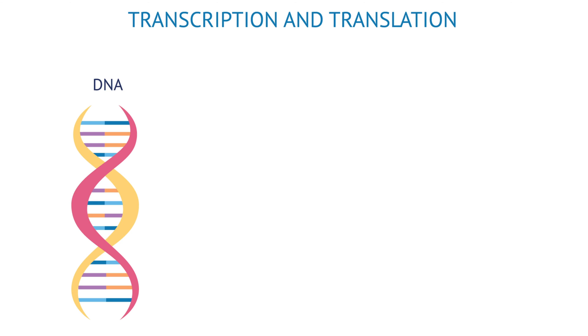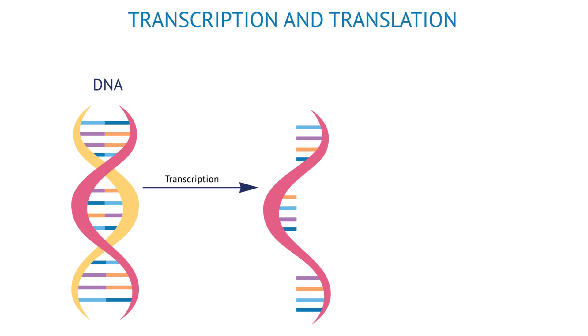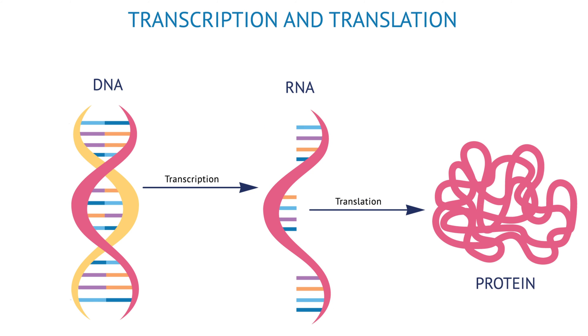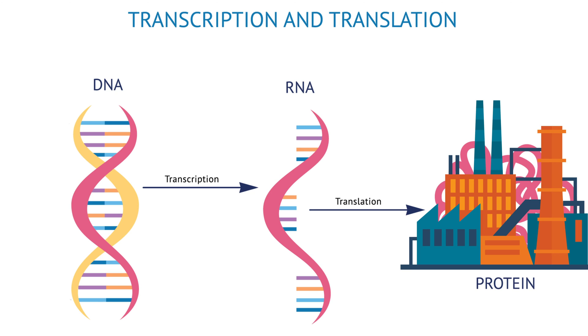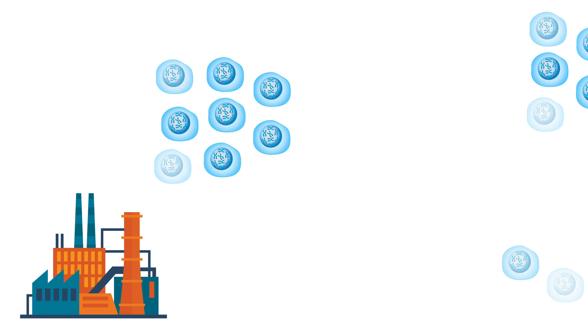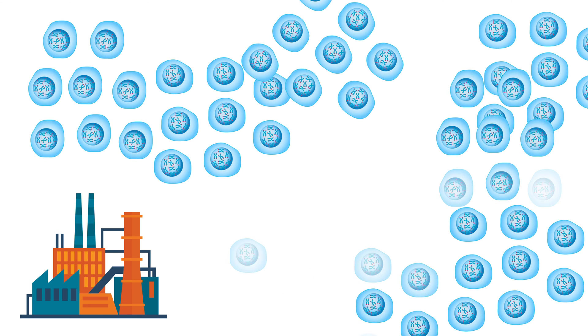That DNA is transcribed from the code into a molecule called RNA, and that RNA is then translated in the cell into the proteins — call them the factories of the cell. You can imagine that the genetic changes that might occur may affect the amount of RNA that's produced, or may affect the structure of the factory. Maybe you make a factory that has an extra smokestack so that your factory is producing more protein.